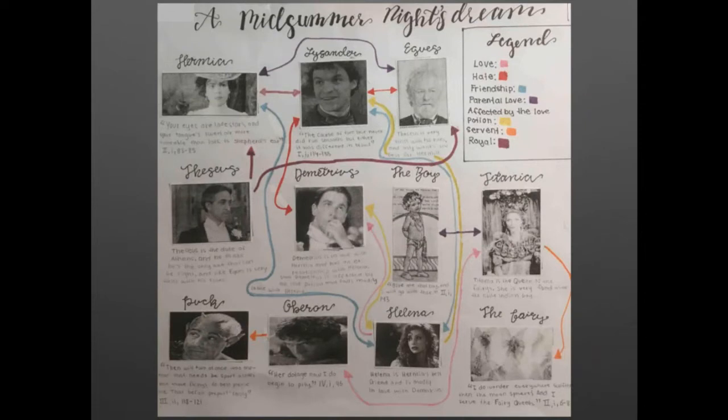Here are some examples of choice assignments. In A Midsummer Night's Dream, one student chose to do a sociogram — showing who all the characters are, with arrows and legends showing the relationships between them. I find this a very rich way of getting a deeper understanding of characters. Some students choose to hand draw this; others have done it via video. The element of choice is always there and I'm open to anything students suggest, as long as it meets the expectations.